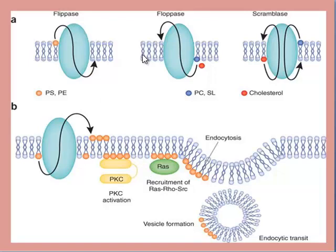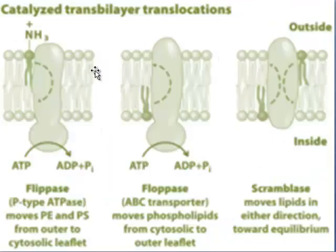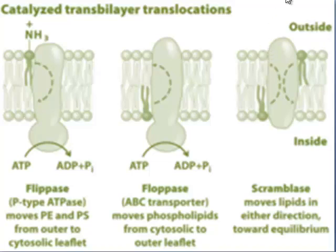We are discussing flippases, floppases, and scramblases. You can see the catalyzed trans-bilayer translocation, in which there is an amino acid group. This will turn towards the lower side of the trans membrane of the plasma membrane. It requires ATP, and this ATP is converted to ADP and Pi.